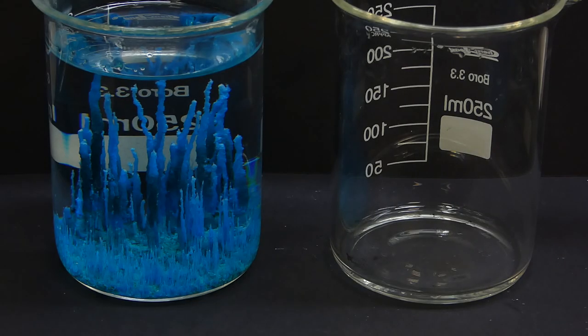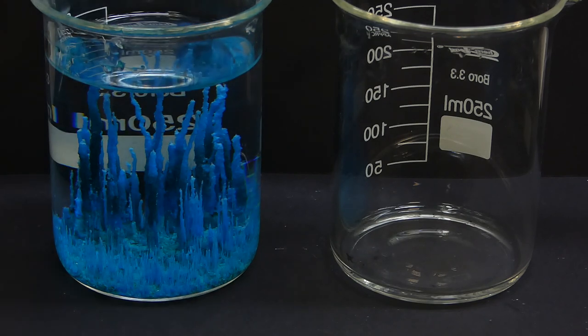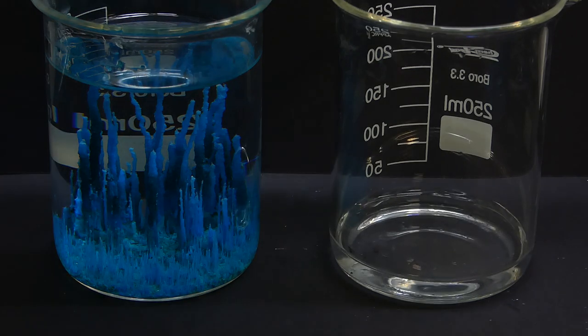After the structures stopped growing, you can carefully pour out the water using a syringe, because spraying the water normally would ruin them, and when you are done you can dry them and use as a nice decoration.